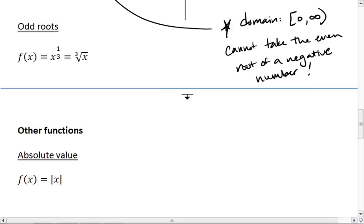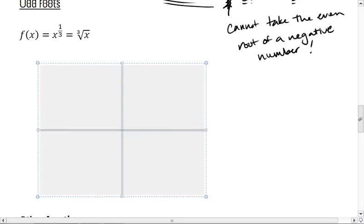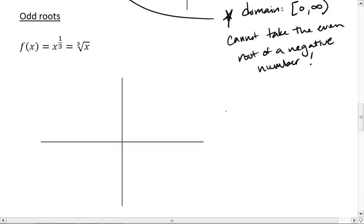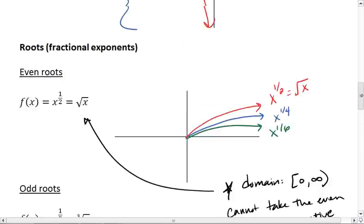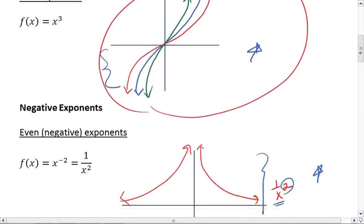For odd roots, we get a graph that looks very similar to our odd exponents, but it looks like the graph has been turned on its side.